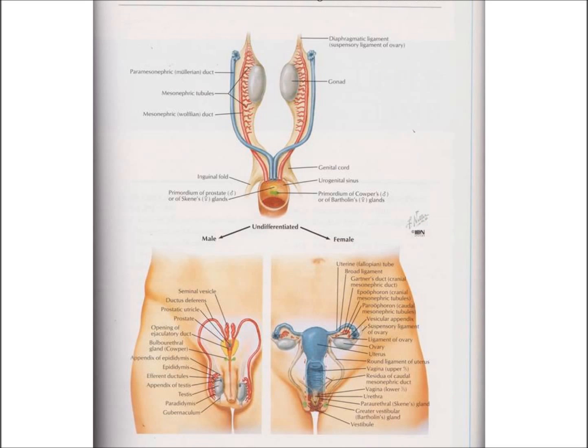The internal genitals also differentiate at this time from a common beginning, shown at the top. Even when still inside of our own mother, the eggs that can become our children are already there. And the egg that grew into us was first formed inside of our maternal grandmother — amazing to contemplate.